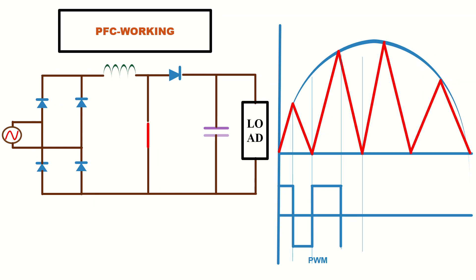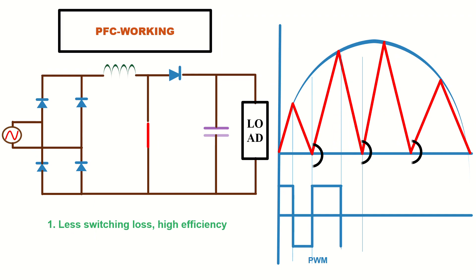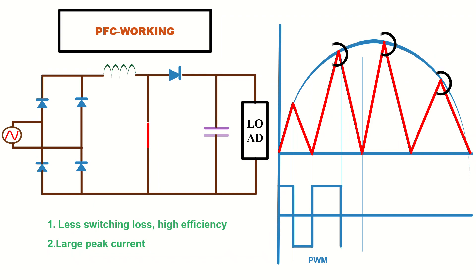This is how critical conduction mode PFC works. One important thing to observe is that the MOSFET turns on when the diode current reaches zero, so switching loss will be less and higher efficiency can be achieved. However, the major problem is large peak currents, resulting in high dI/dT and RMS currents conducted throughout the PFC stage. Critical conduction mode is preferred for medium power applications due to zero current switching and lower peak current than discontinuous conduction mode.